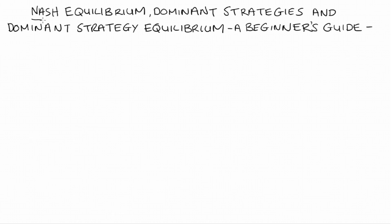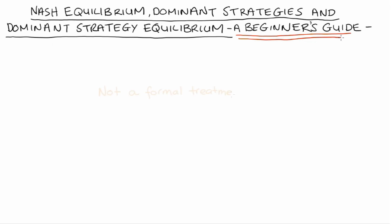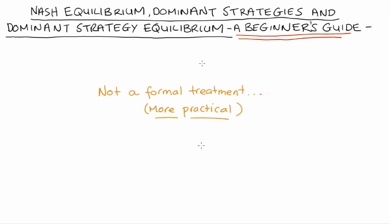Hi everyone. In this video I'm going to demonstrate finding Nash equilibrium, dominant strategies, and also dominant strategy equilibrium. This is a video for beginners so I'm only covering the simplest sort of cases, and it's not a formal treatment of these concepts at all — it's more practical. Though I am open to making a video that gives a more formal treatment of this stuff if you want something like that, please leave a comment below.